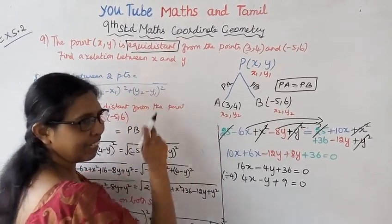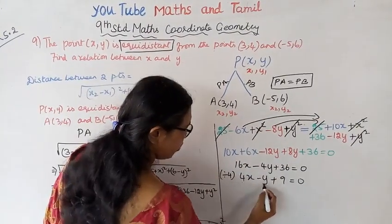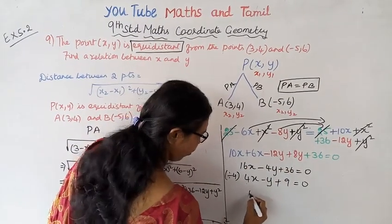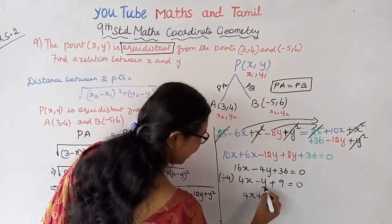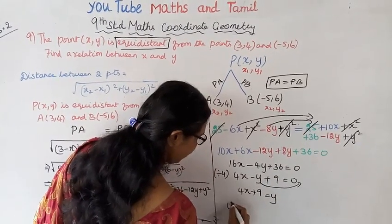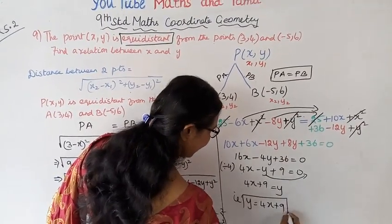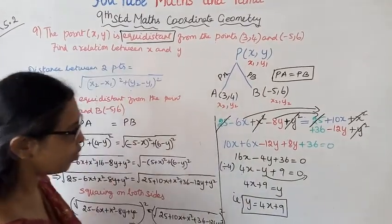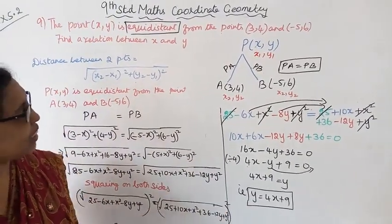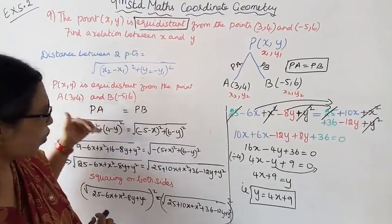Find the relation between x and y. The relation is 4x - y + 9 = 0, or y = 4x + 9. This is the relation between x and y. This is the answer.